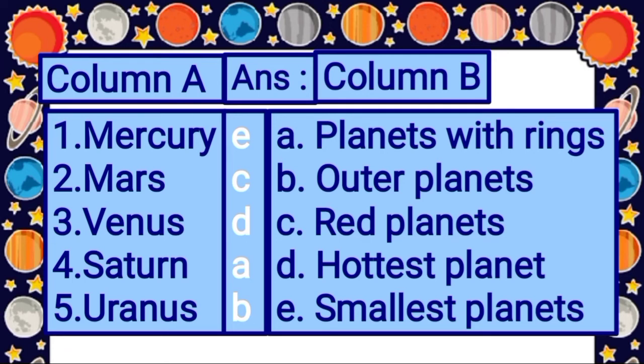Fourth word from column A is Saturn. As you know, Saturn is also known as the planet with rings because it appears to have several rings around its middle. So for Saturn, the answer is option A: planet with rings.